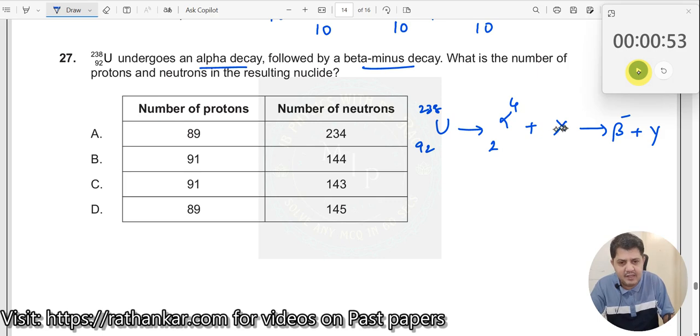2He4. You will get some value here. I will directly put beta here. Plus beta minus. What is this? Minus 1 e0 over here and then y over here.